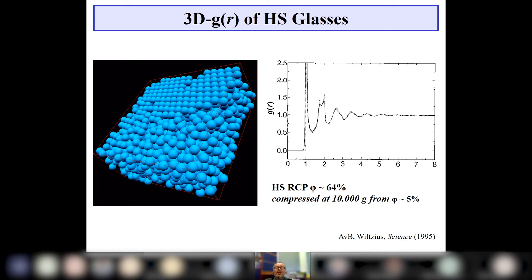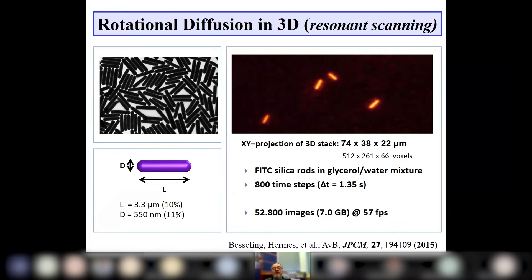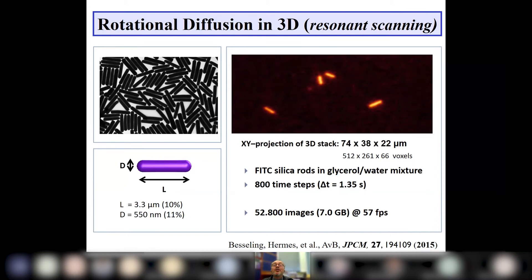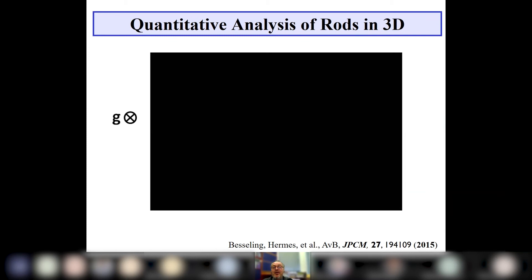Fast-forwarding to present-day confocal microscopy possibilities: we can now scan in 3D very fast. I'm showing a movie projected to 2D for easier visualization — we can follow the translational and rotational diffusion of fluorescent silica rods in 3D, obtaining full 3D data sets in even a fraction of a second. By using point spread function engineering, we can also increase resolution to below 100 nanometers, allowing analysis of systems far more complex than spherical particles.